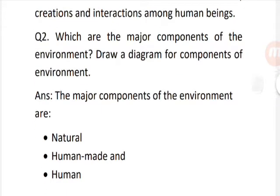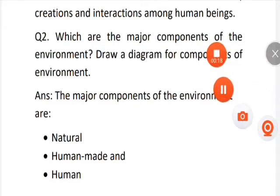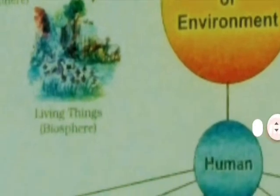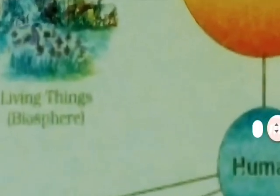Question 2: Which are the major components of the environment? Draw a diagram for the components of environment. Answer: The major components of the environment are natural, human-made and human. Natural components of environment include biosphere (living things) and lithosphere (land).